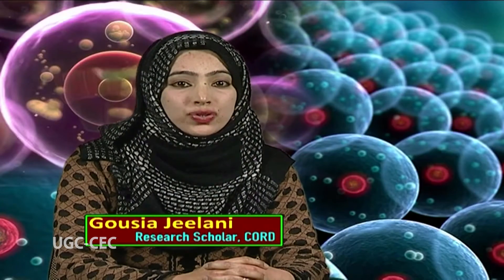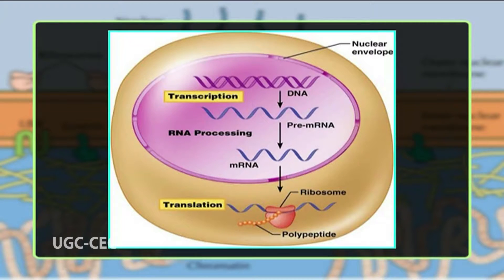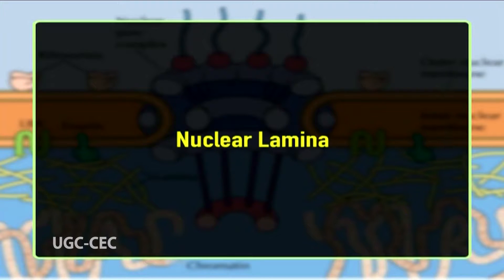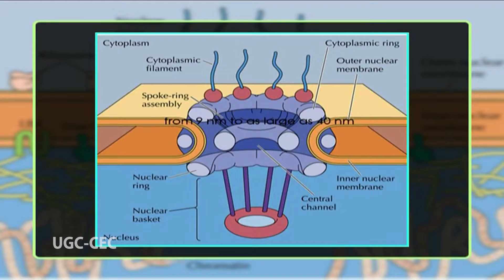The central channel contains a structure called the central transporter through which active transport of macromolecules is thought to occur. The nuclear pore complexes are the only channels through which small polar molecules, ions, and macromolecules like proteins and RNAs are able to travel between the nucleus and the cytoplasm by an active process, in which appropriate proteins and RNAs are recognized and selectively transported in only one direction — from nucleus to cytoplasm or from cytoplasm to the nucleus.